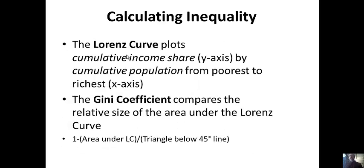To calculate the Gini, we use the Lorenz curve, which plots cumulative income share on the y-axis by cumulative population from poorest to richest on the x-axis. We compare it to a 45-degree line representing perfect equality, then look at the curve underneath. We look at the relative size of the area between the Lorenz curve and the 45-degree line compared to the triangle that represents perfect equality. The area under the Lorenz curve will be small if there's more inequality, so you take 1 minus that percentage to get the Gini.